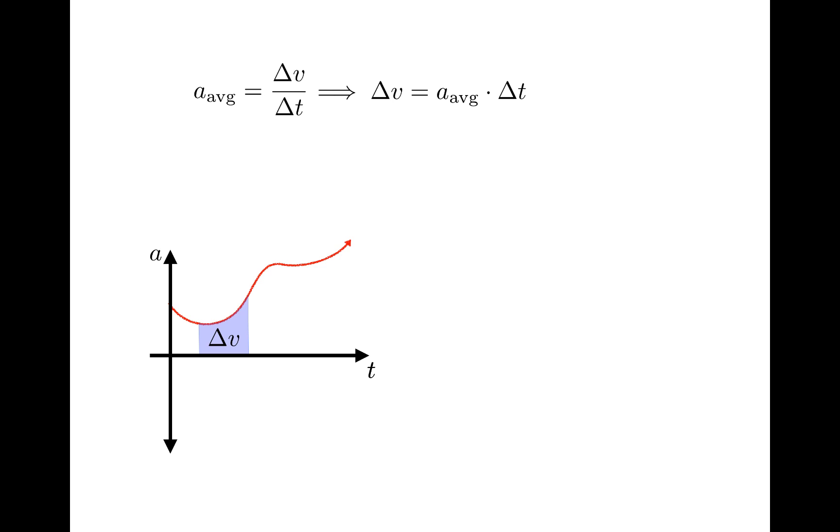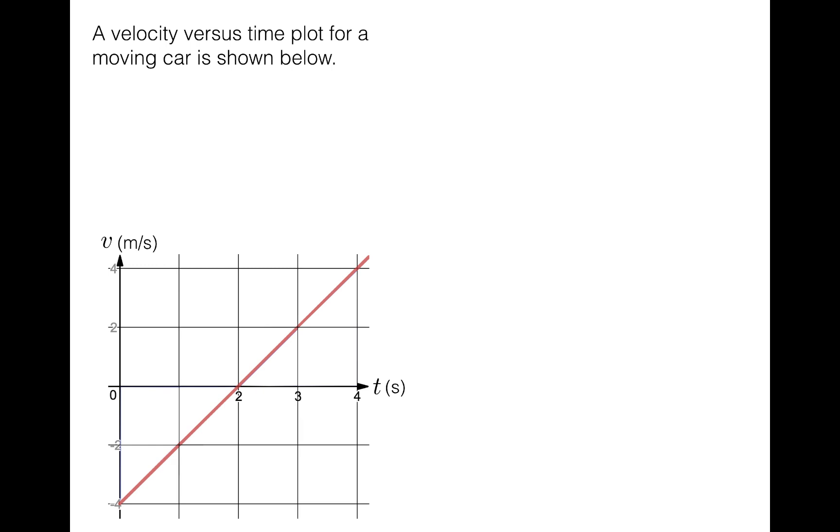With these things in mind, let's take a look at an example to see how all of this is applied. Here's a velocity versus time plot, and this is for a moving car. Looking at the plot, you can see that the car starts with negative velocity, slows to a stop, and then begins moving forward with increasing speed. The velocity versus time plot is a straight line, so acceleration is constant. It might seem like kind of an odd motion for a car, but it isn't unheard of. This is actually a pretty good model for a car coasting in reverse up a hill, stopping momentarily, and then coasting back down again.